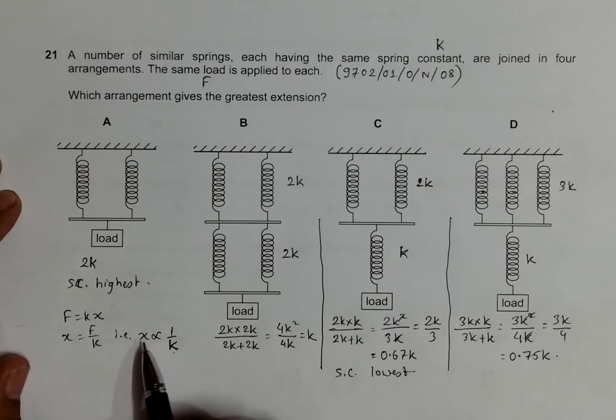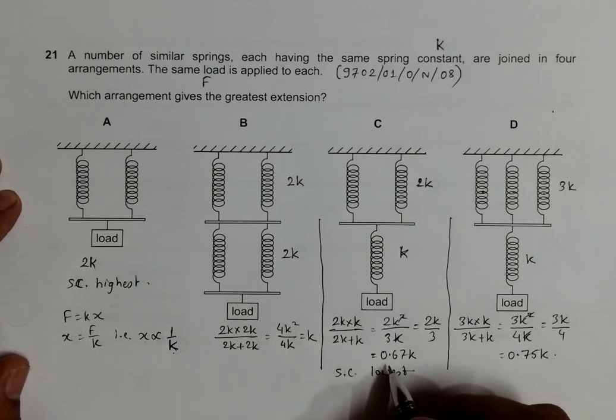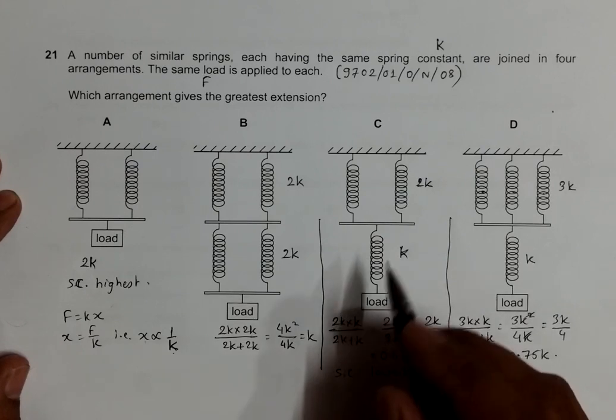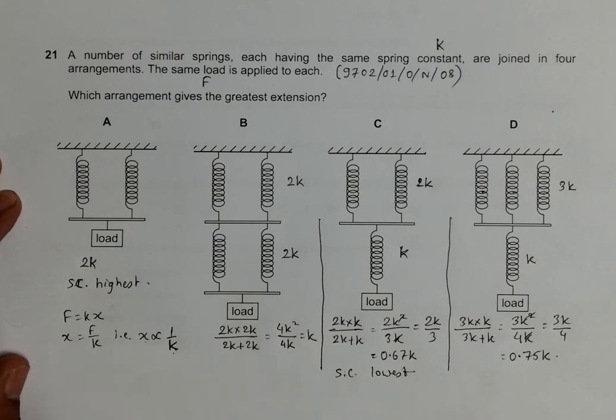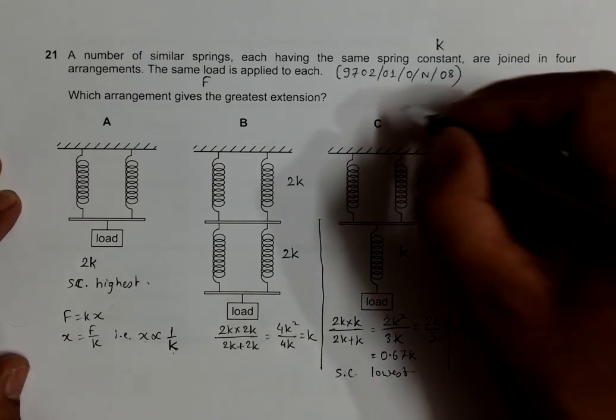If K is lowest, X will be greatest or highest. So we have to search for this. In choice C, the value of K is lowest, so that's why in this arrangement the extension will be the highest. So C should be the correct answer.